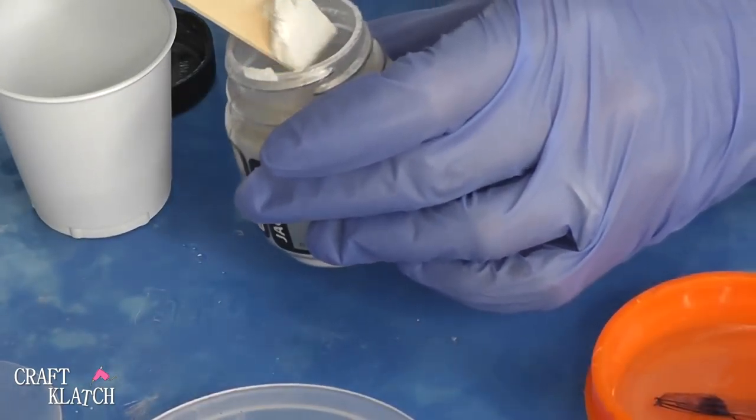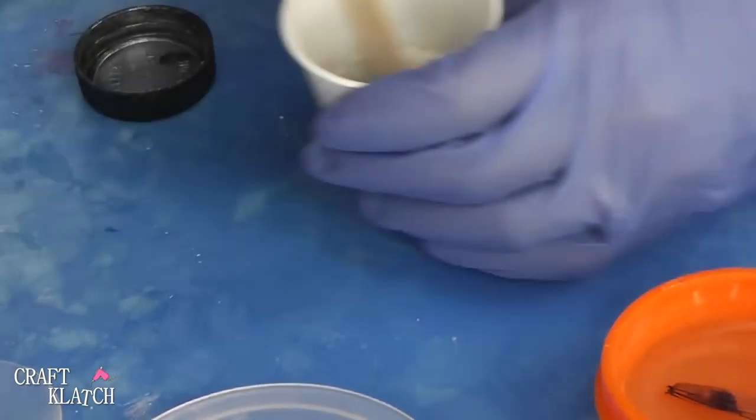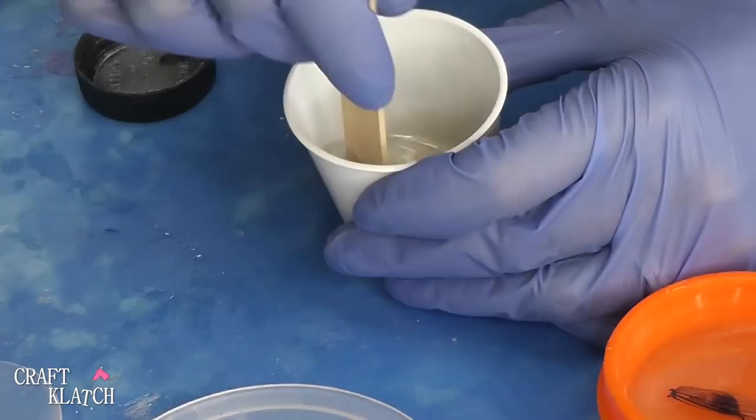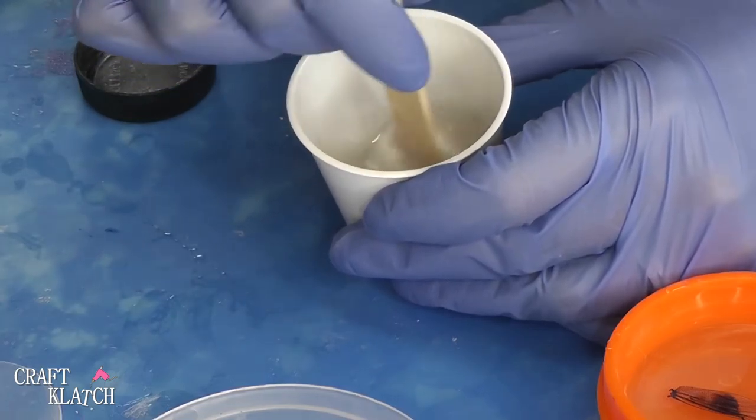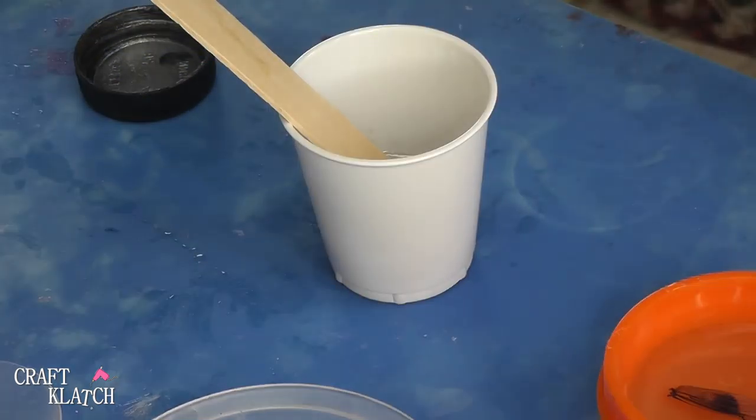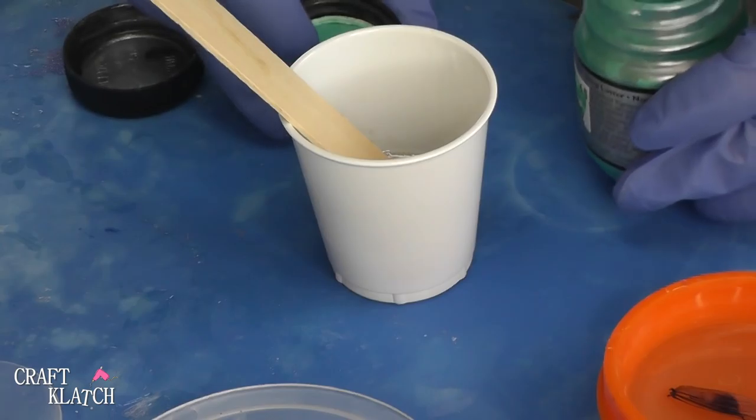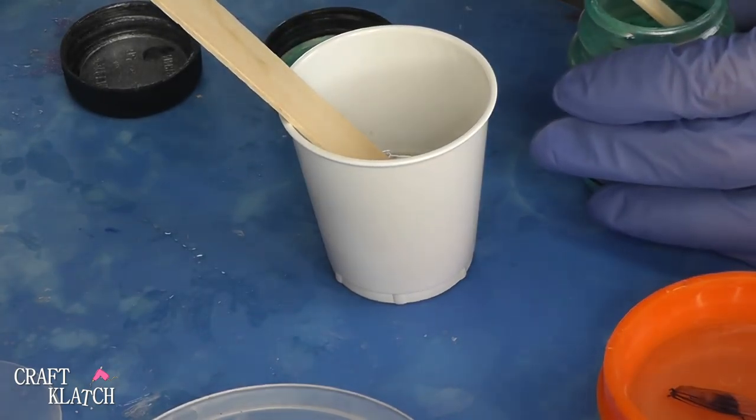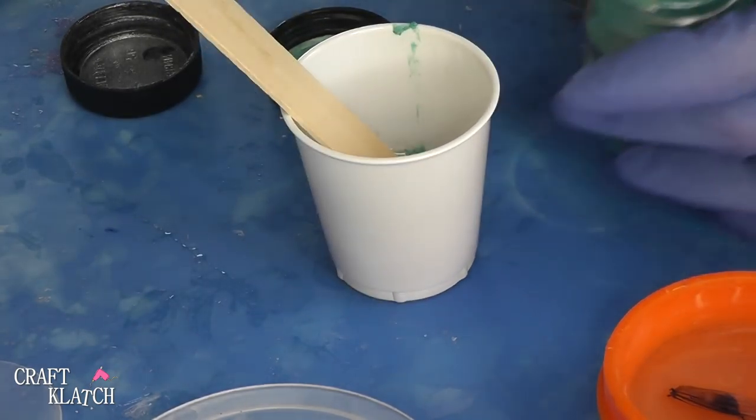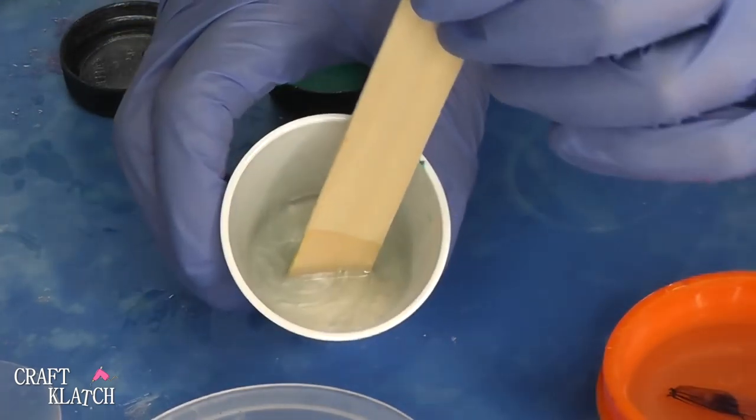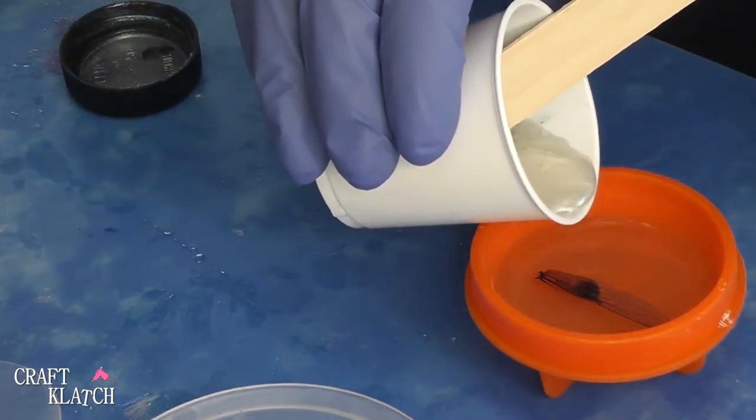So I've mixed some more of the Easy Cast. I'm going to mix some of the pigment powder in here. Now this still has that beautiful metallic look to it. And I can add just a very small touch of this greenish to it, just to give it a little slight tint. All right, so there we have it. I'm going to pour it on here.